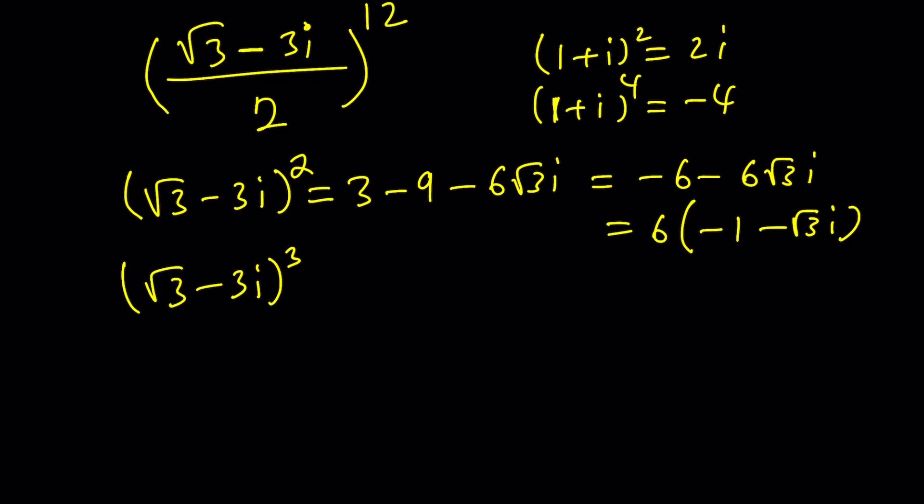And there is two ways to cube it. You can multiply the square by itself or you can just use the cubic formula. The cubic formula says a cubed which is 3 root 3 minus 3 times a squared which is 3 times b. And then plus 3a 3 root 3 times b squared. b squared is going to be 9i squared which is negative 9. So we're going to get a negative 9 here. And finally 3i cubed. Negative 3i cubed. That's going to be negative 27i cubed. But i cubed is negative i. So it's going to be positive 27i. Make sense?